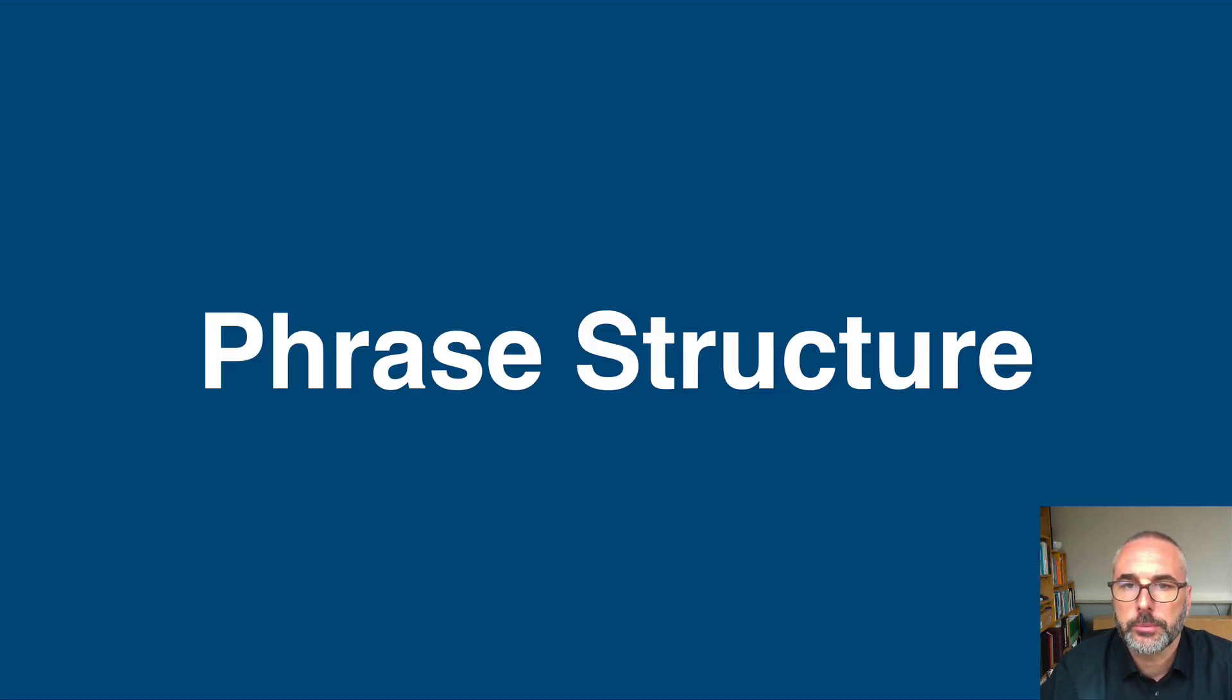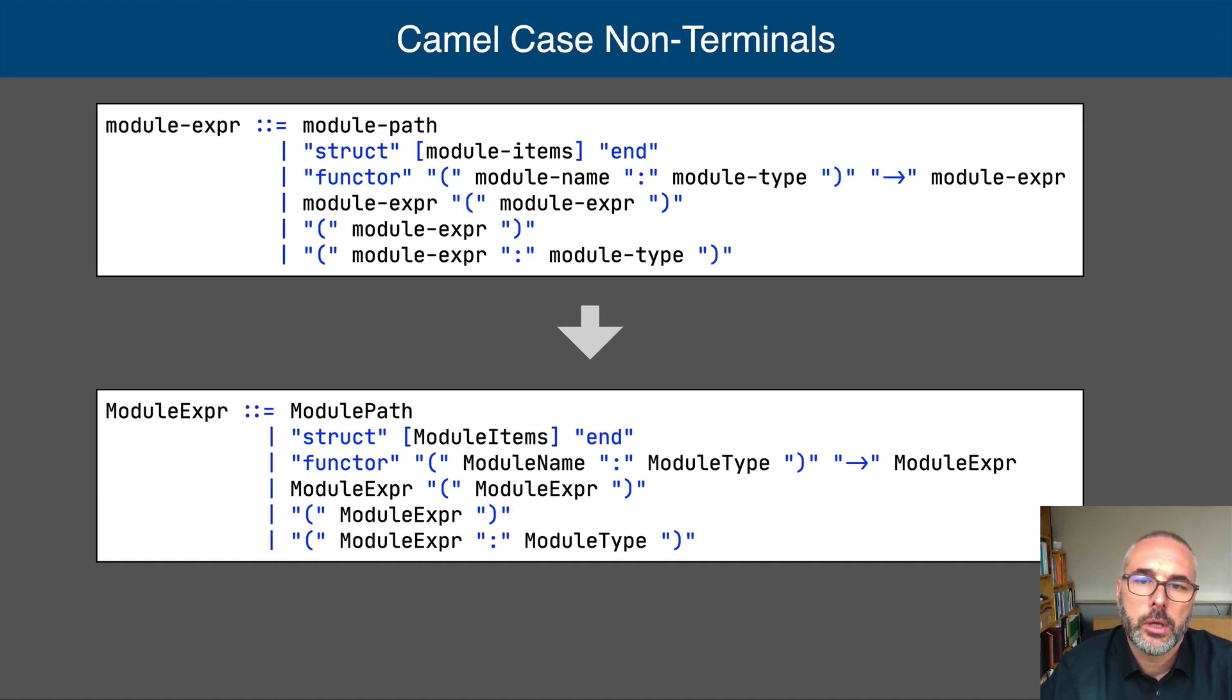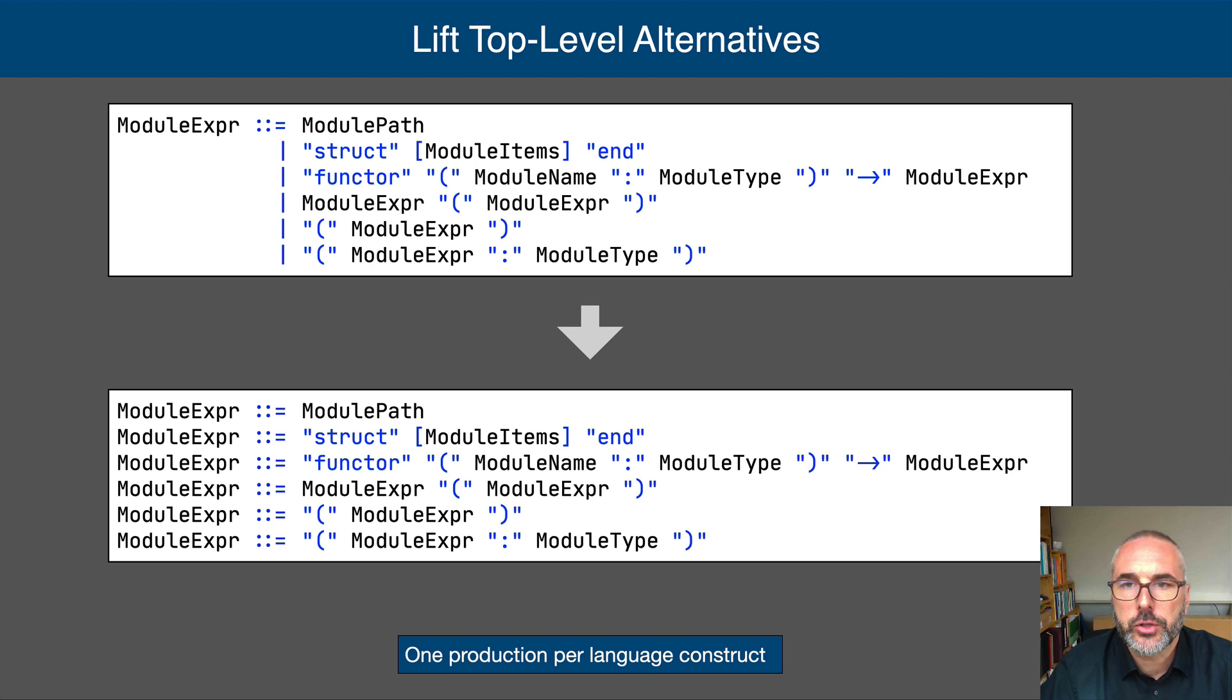We start with the phrase structure of the grammar. We first applied some cosmetic transformations to the grammar to make terminals explicit and to cast non-terminals in camel case, the preferred style of SDF3. The next transformation lifts top-level alternatives to individual productions. Each top-level alternative in the production for a non-terminal corresponds to a language construct. In SDF3, each production defines one language construct.